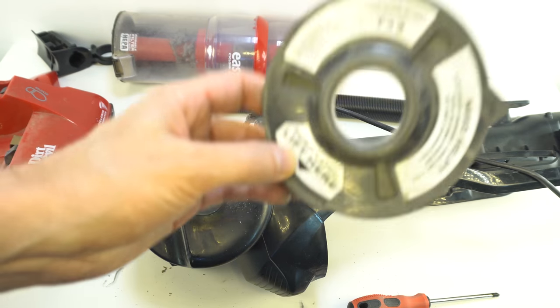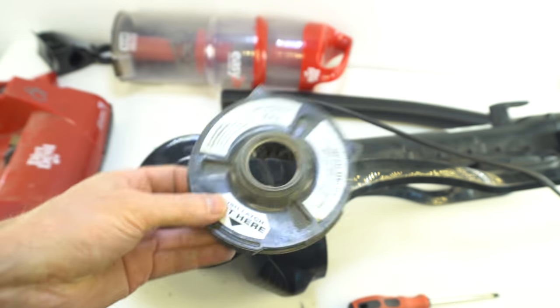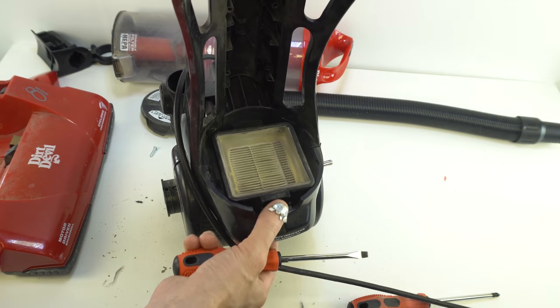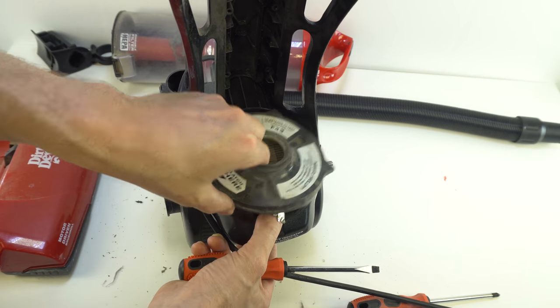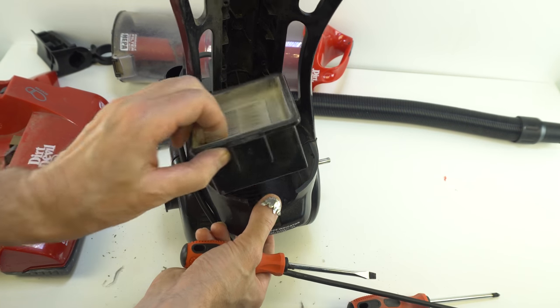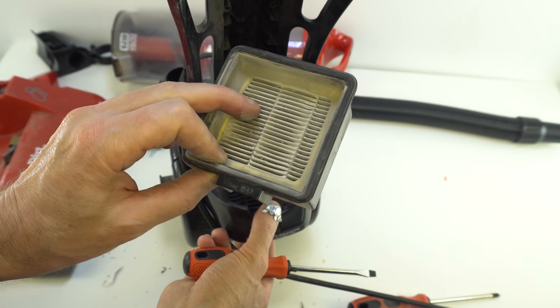I have this rubber cup here. From here, this small filter, as you can see. If you need to change this filter, you can unpart your vacuum. Yes, exactly.